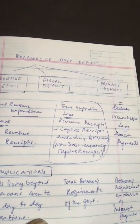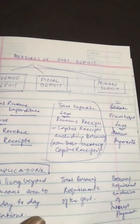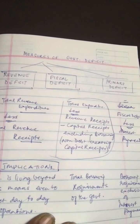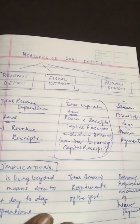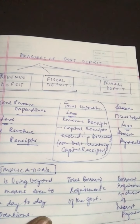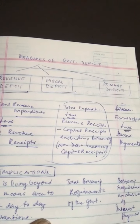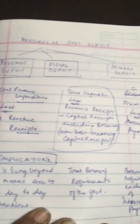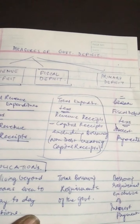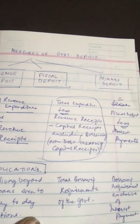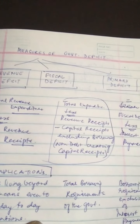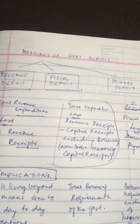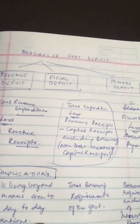Talking about all three types — revenue deficit, fiscal deficit, and primary deficit — we have made a distinction between the three on the basis of meaning, indication, and formula. Now we are going to talk about financing these deficits — what does the government do to finance these deficits?